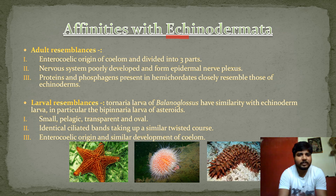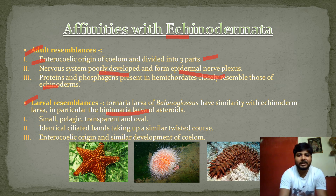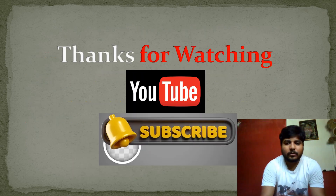The next affinity is with Echinodermata. There are adult as well as larval resemblances. Adult resemblances include: enterocoelic origin of the coelom divided into three parts; the nervous system is poorly developed and forms an epidermal nerve plexus; proteins and phosphagens in Hemichordata closely resemble those of Echinoderms. Larval resemblances: the tornaria larva of Balanoglossus is similar to echinoderm larvae, particularly the bipinnaria larva — both are small, pelagic, transparent, and oval, with identical ciliated bands taking a similar twisted course, and both show enterocoelic origin and similar development of the coelom.